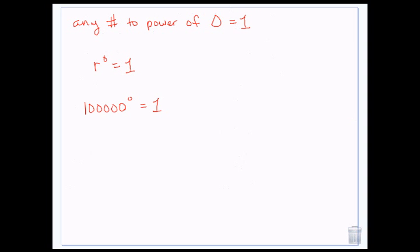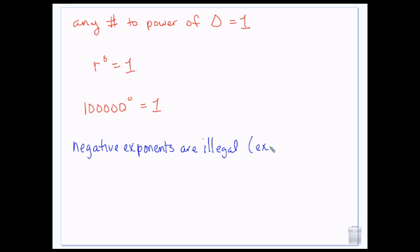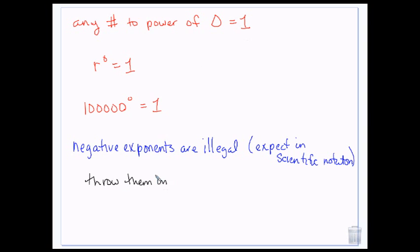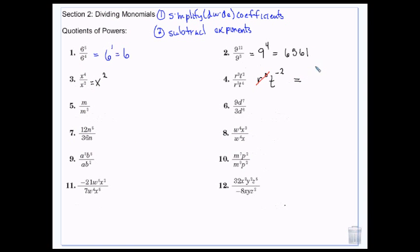Negative exponents are illegal except in scientific notation. In general math, negative exponents are illegal, so what happens is we throw them in the basement — we put them in jail. T to the negative 2 gets thrown downstairs, and if there's nothing up top, we add a 1. So R to the 0 times T to the negative 2 is actually 1 over T squared.